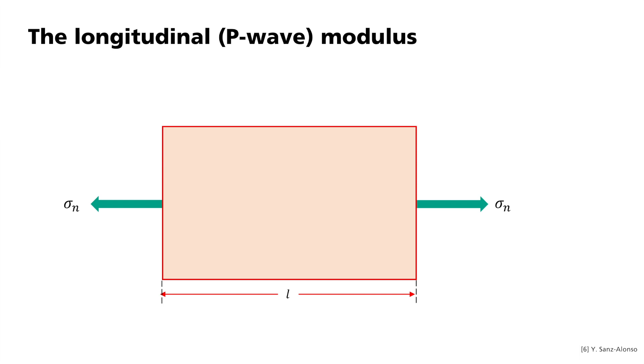Like Young's modulus, it indicates the ratio between normal stress and strain in the same direction. However, it does not permit lateral extensions. We can imagine this as a rigidly coated sample. The longitudinal modulus is always positive. It is generally larger than Young's modulus.